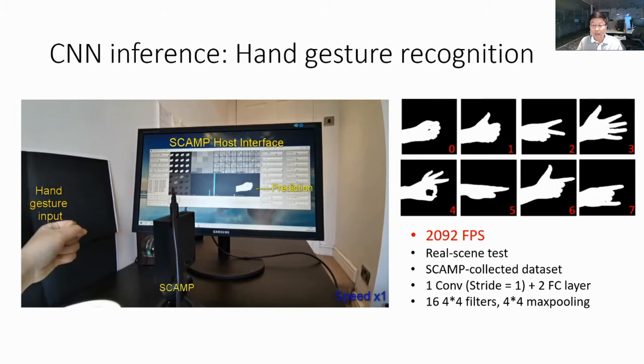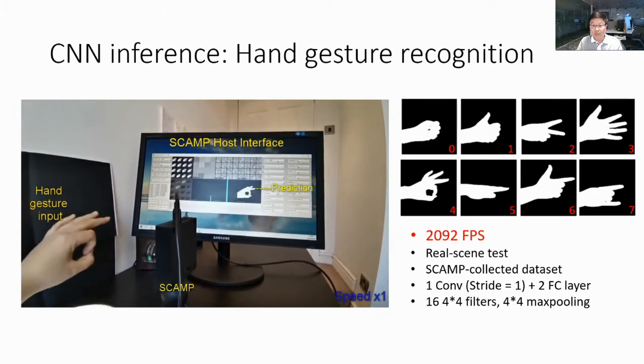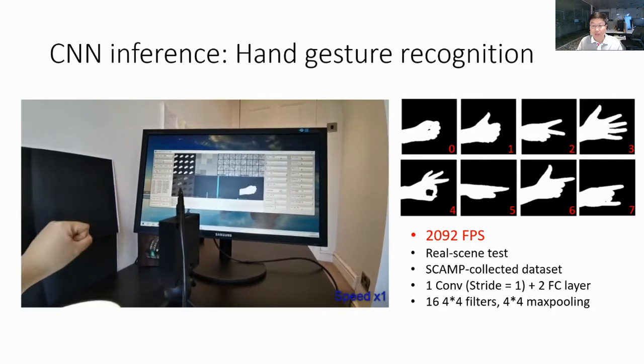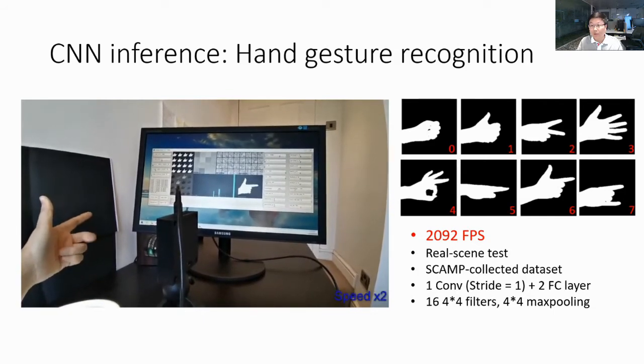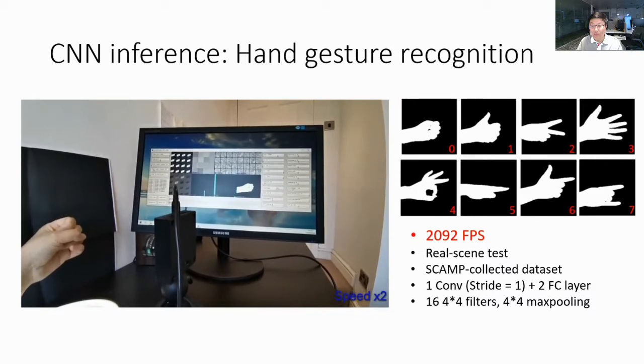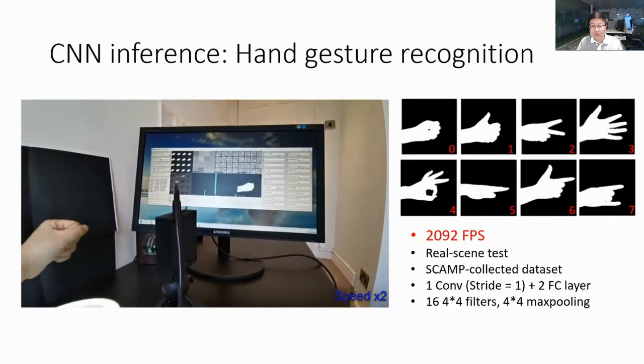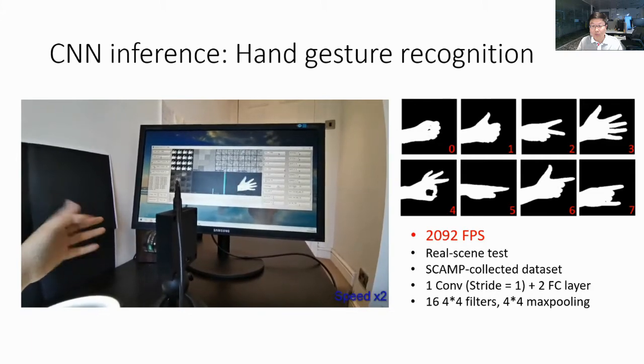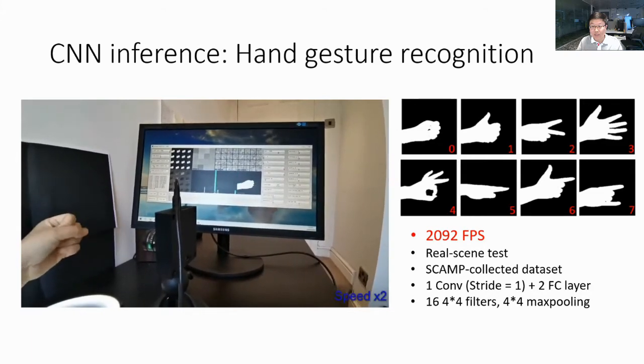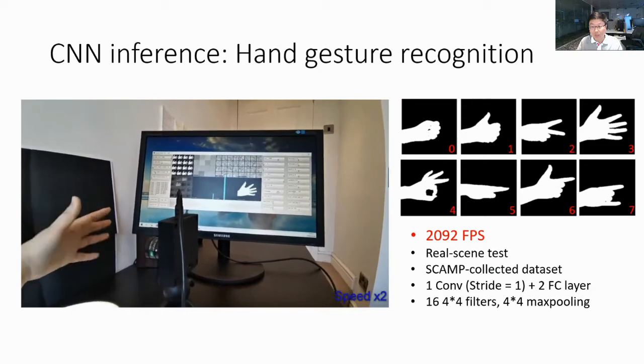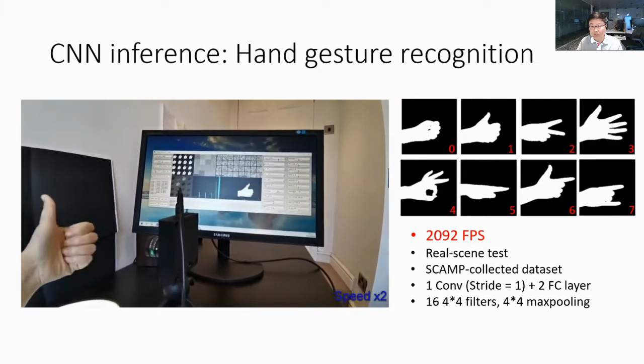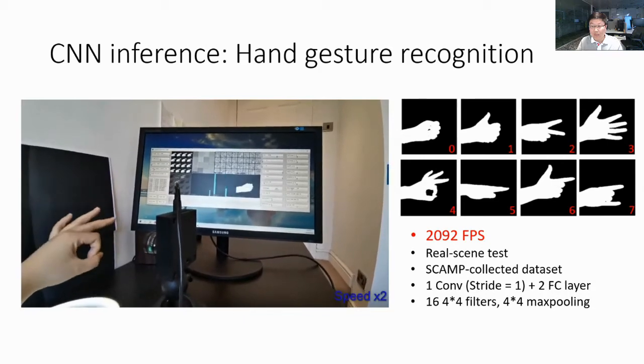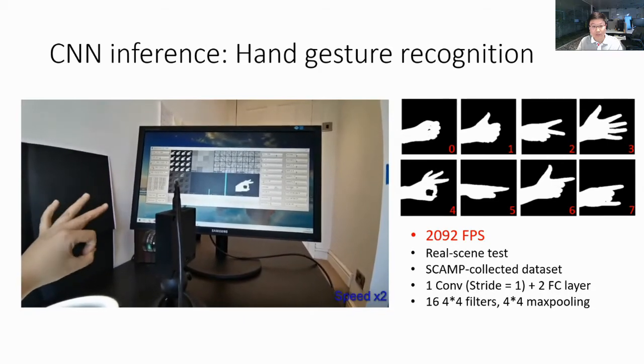We created a hand gesture dataset by capturing commonly used eight types of hand gesture with SCAMP. Inference evaluation is performed by hand randomly changing poses in front of SCAMP. The CNN used for classification consists of a single 4x4 kernel convolutional layer using 16 filters, followed by a 4x4 max pooling and two fully connected layers.